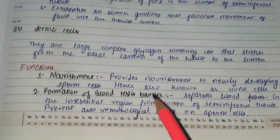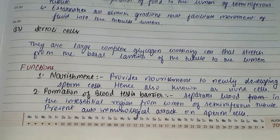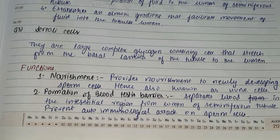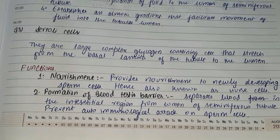First, nourishment — Sertoli cells provide nourishment to newly developing sperm cells, which is why they are also known as nurse cells.